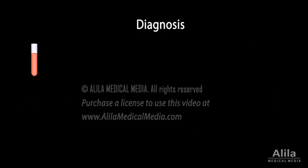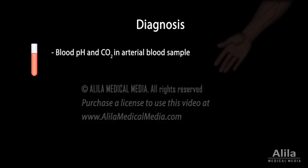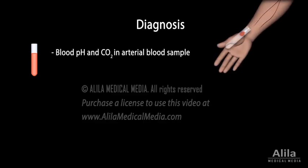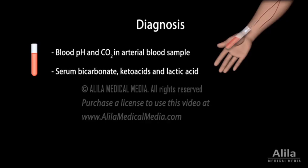Diagnosis of acidosis requires measurement of blood pH and carbon dioxide in an arterial blood sample, usually taken from the radial artery in the wrist. Arterial blood is taken because it is generally more reliable than venous blood for carbon dioxide measurement. Serum bicarbonate, ketoacids, and lactic acid are tested to help identify the cause.